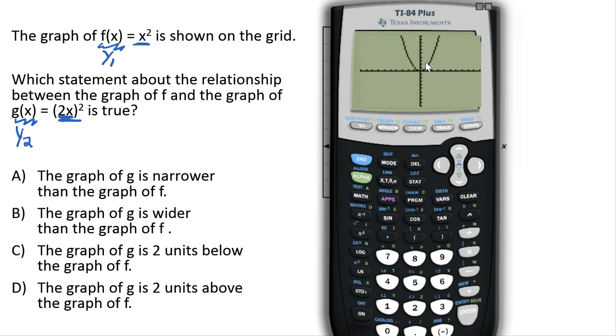And then you can hit the graph button, and our first line, which is x squared, is right here, and our second line, which is (2x) squared, is right here.